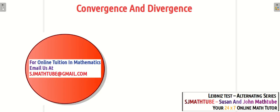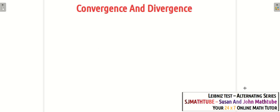Hello friends, welcome to Susan and John Math Tube. Today we are going to continue our discussion on convergence and divergence, and we will learn a very easy test called the Leibniz test. This test is used to test the convergence and divergence of alternating series. Till now in this series we had been talking about positive-termed series, but now we will learn Leibniz test, which applies to alternating series.